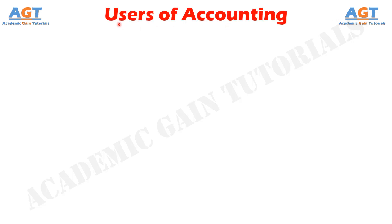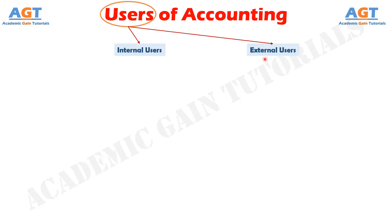Financial information that users need depends upon the kinds of decisions they make. There are two broad groups of users of financial information: internal users and external users. Internal users of accounting information are managers who plan, organize, and run the business.